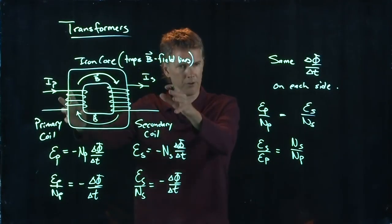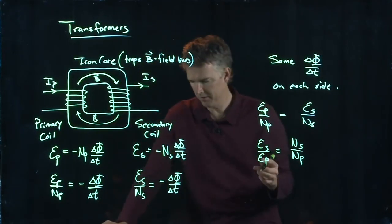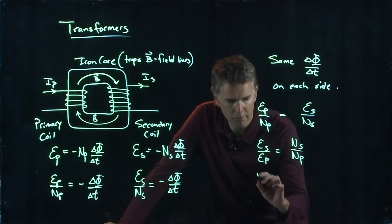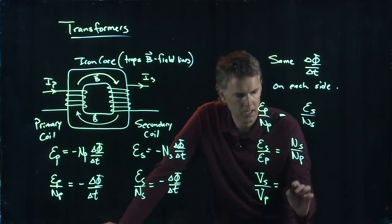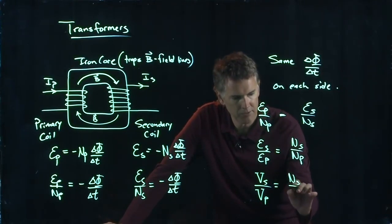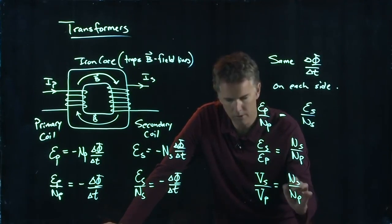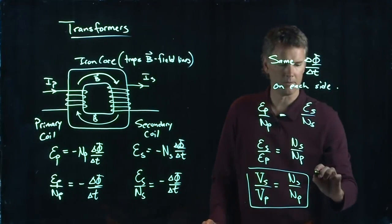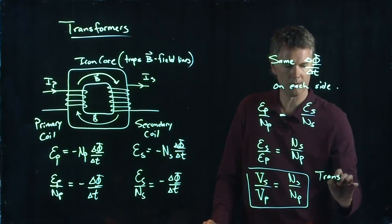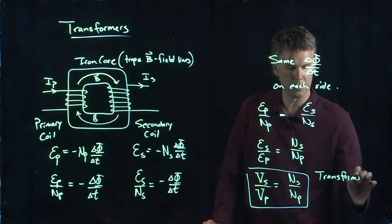And once you hook this stuff up to a circuit and there is some resistance in it, then these things become voltages. Voltage of S over voltage of P is just N sub S over N-P. And this thing right here is known as the transformer equation.